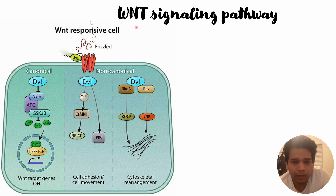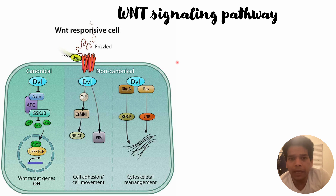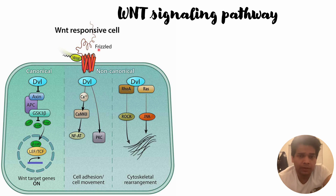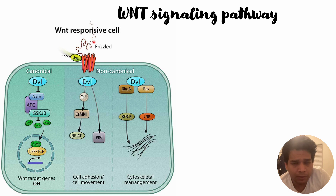In this video we will discuss the WNT signaling pathway. This WNT signaling pathway plays an important role during embryogenesis, and if this WNT signaling pathway gets dysregulated it might also trigger the onset of cancer within patients. So let us start with the WNT signaling pathways, which are mainly categorized into two paths.